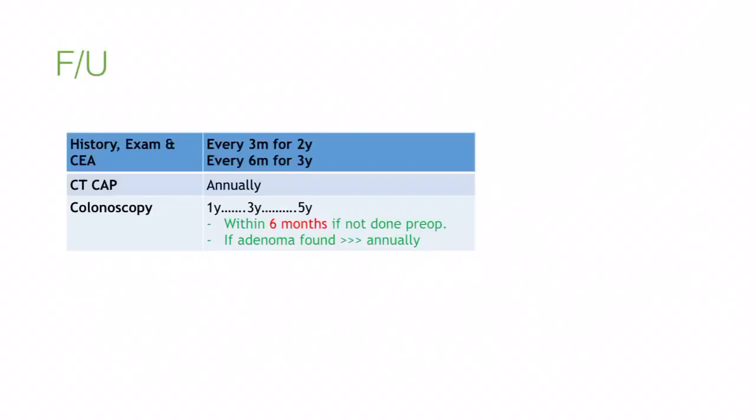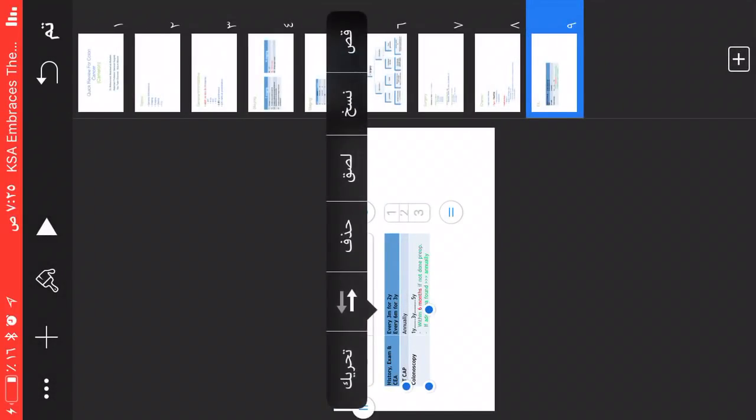CT scan of the chest, abdomen, and pelvis is done annually. Colonoscopy follows a 1-3-5 year schedule. Exceptions: if colonoscopy was not done pre-operatively (e.g., emergency surgery), perform it within six months to exclude synchronous lesions. If adenoma is found at the one-year colonoscopy, repeat annually rather than waiting until year three. This is the last slide — a simple, fast review to revise the night before the exam.